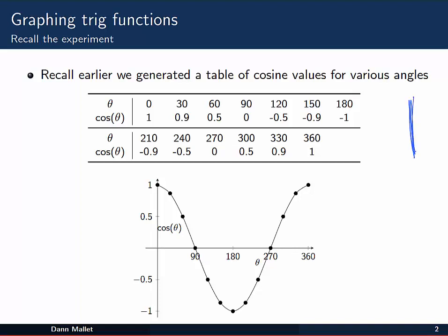Some examples are shown here. We have that when theta is 0, cos of theta is 1. When theta is 30, cos of theta is approximately 0.9, and so on for all these other angles all the way up to 360.